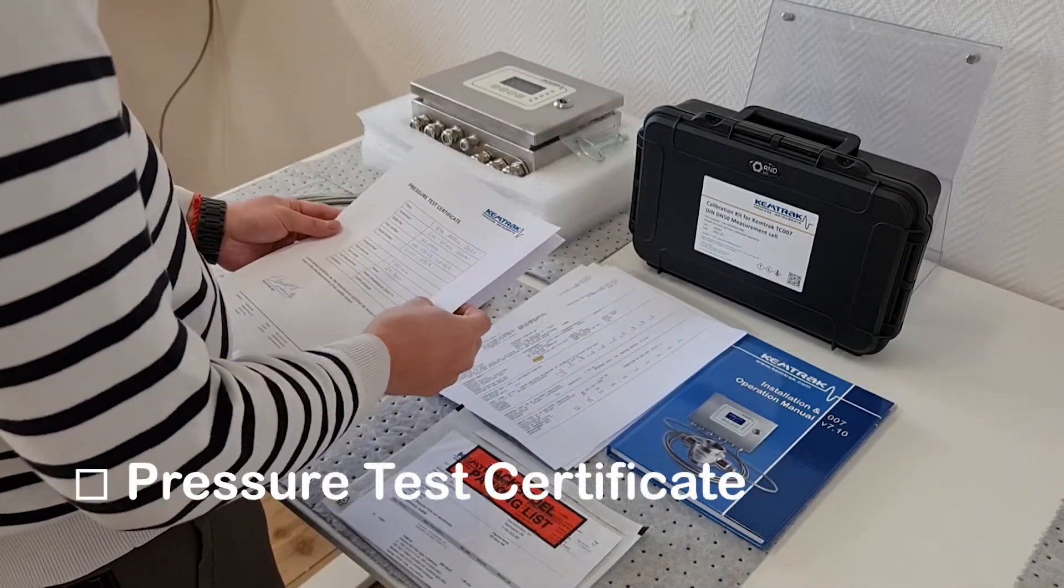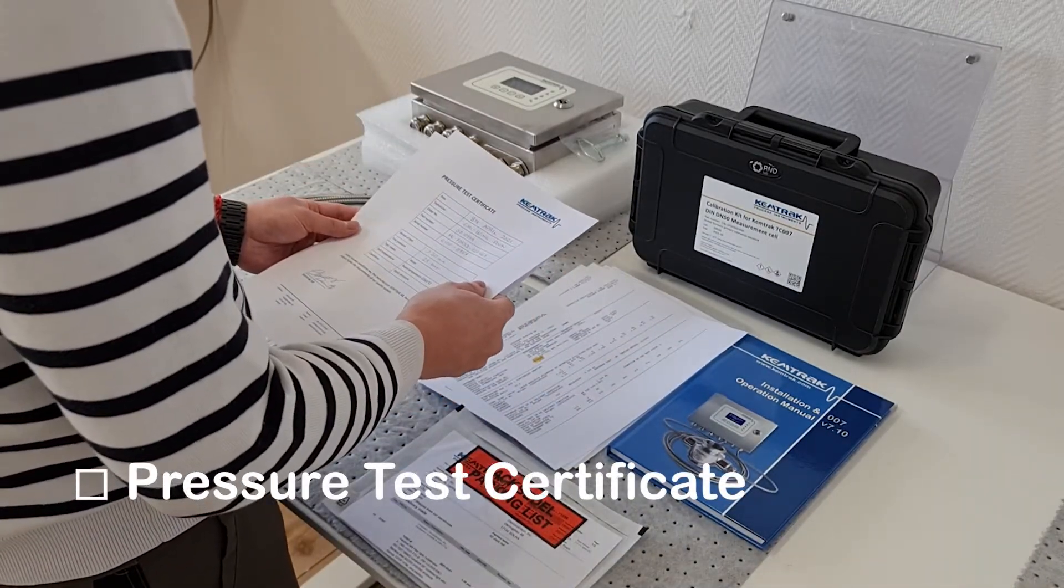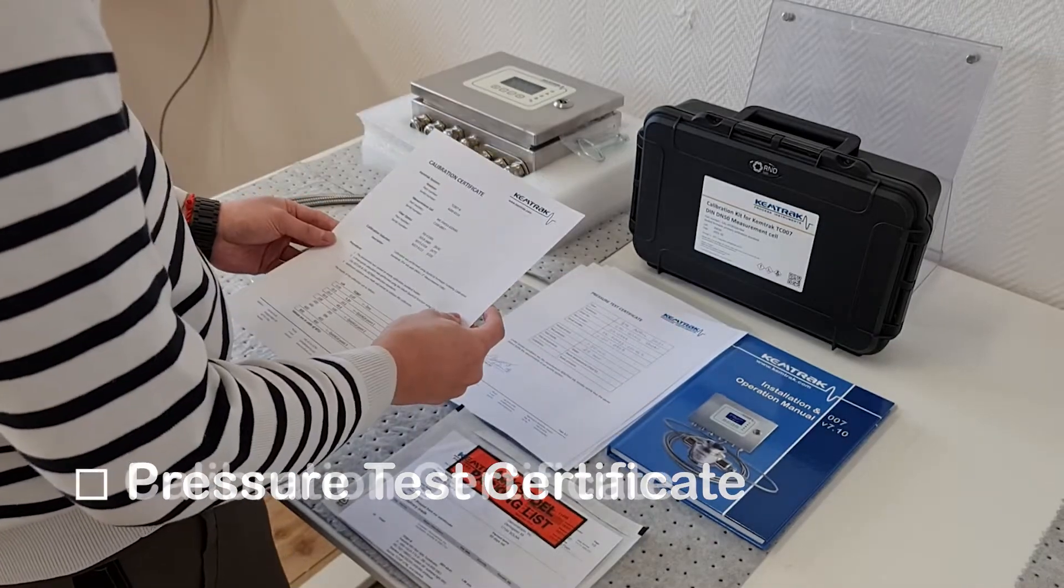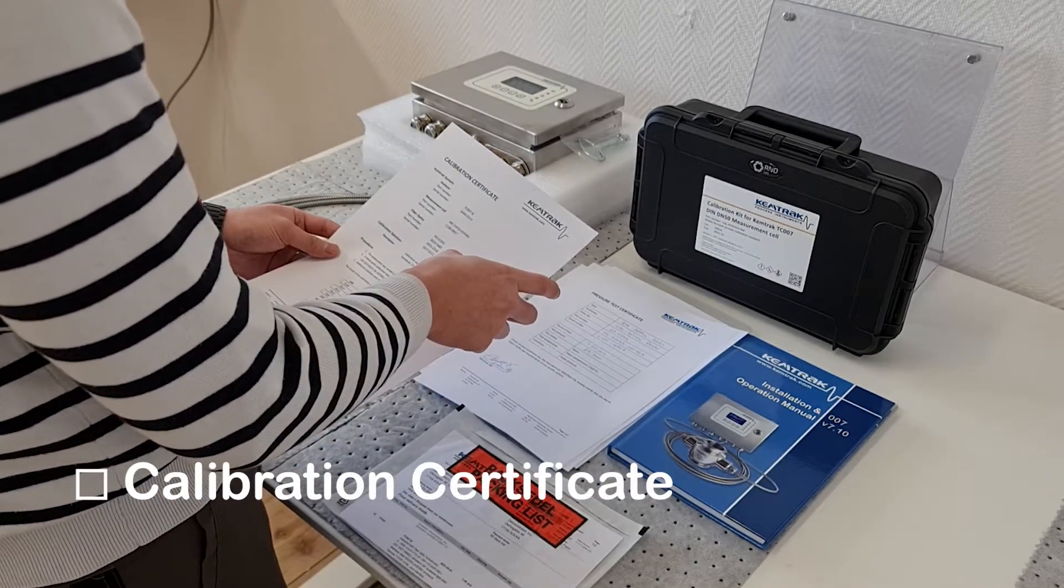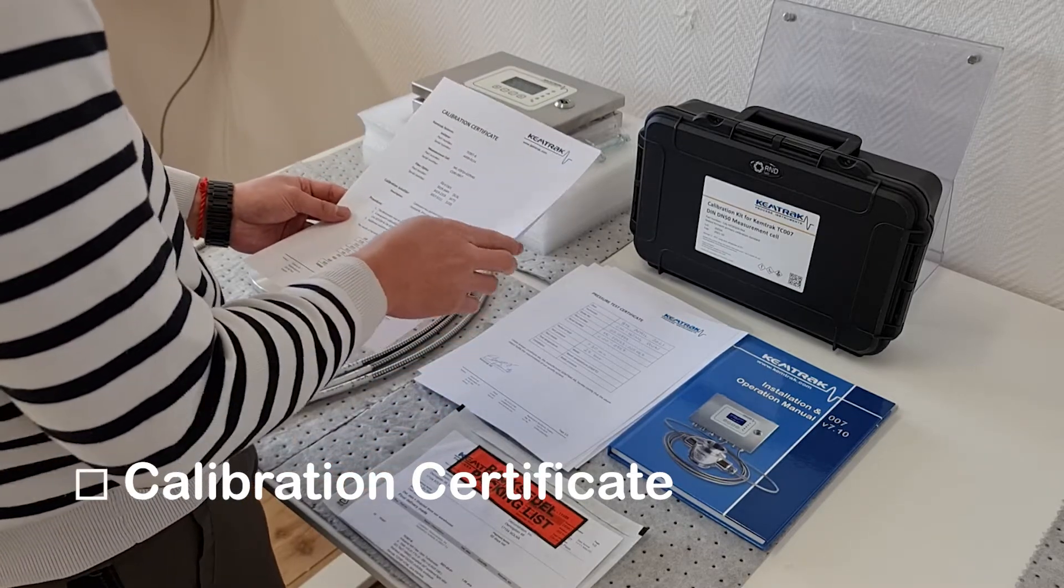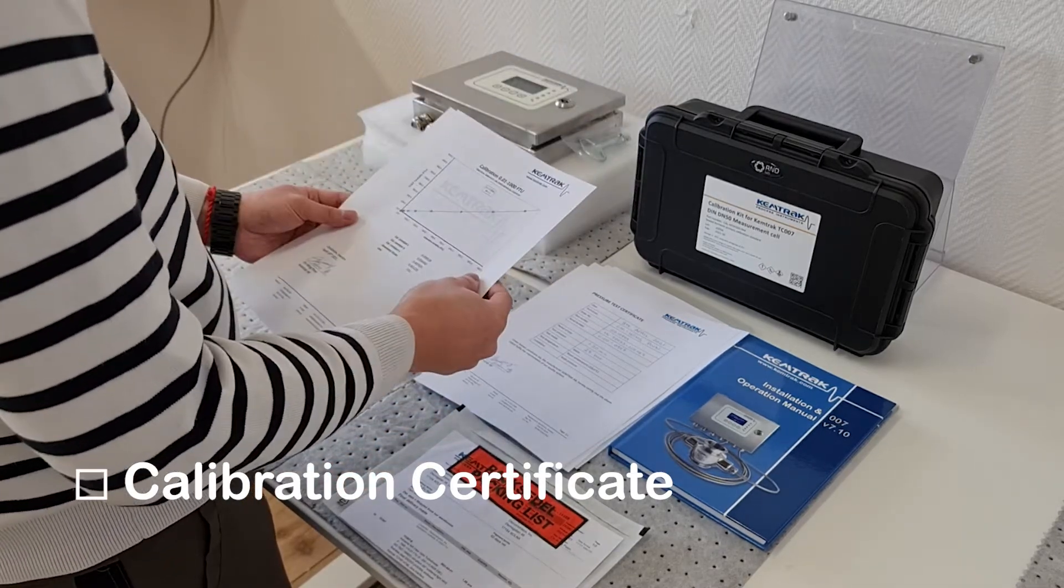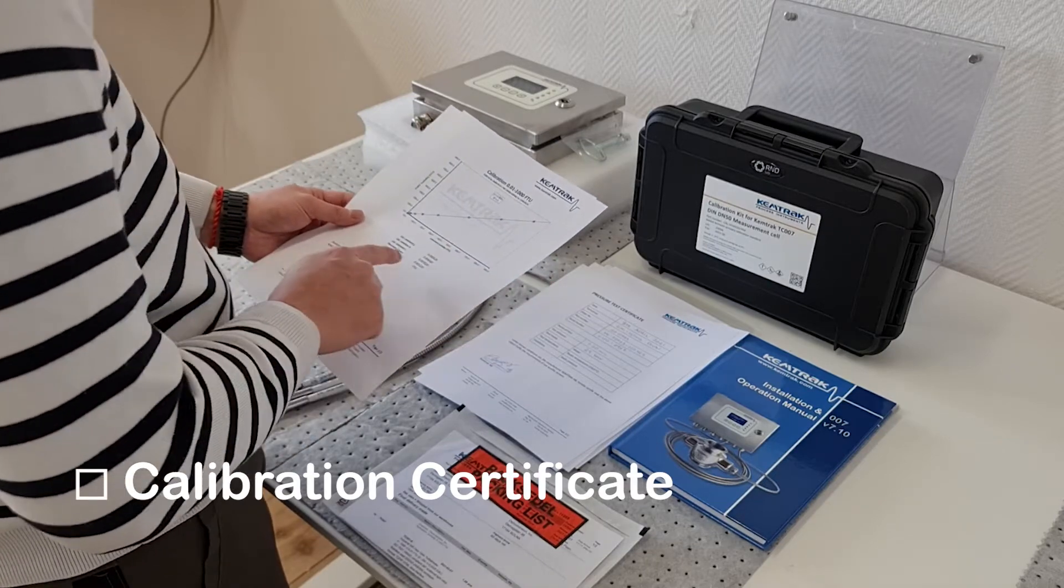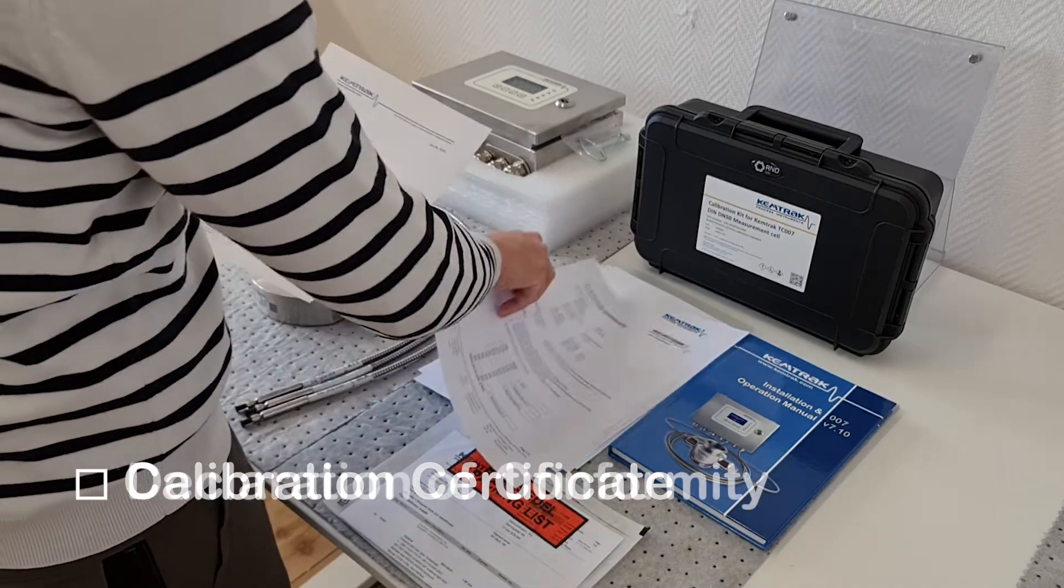The third document is a pressure test certificate. The Chemtrak TC007 turbidity meter comes complete with a factory calibration which is documented in the calibration certificate, and a declaration of conformity.